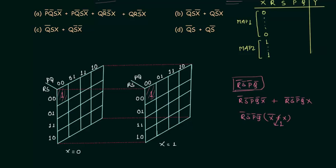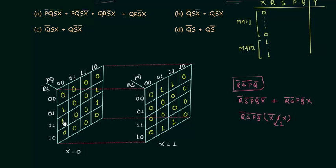Now we can obtain the SOP form using the 5-variable kmap. I will fill the kmap with the values given in the problem. Once filled, we make groups of ones. First, I try to combine two ones, but the corresponding cells in the other kmap are zero, so we cannot combine across maps. Instead, we combine two cells with two other cells within the same map, calling this group P1. Similarly, we combine another set of ones as group P2.